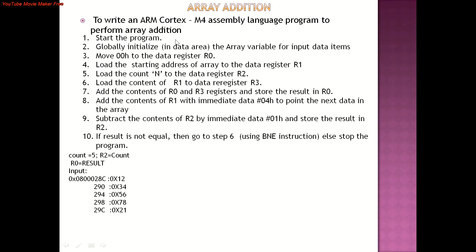According to the logic, we are going to use four registers to perform array addition: R0, R1, R2, and R3. R0 is used as a temporary register, R1 is configured as a memory pointer, R2 is the count register storing the number of additions to be performed, and R3 is for getting data items from memory. First, initially clear R0.